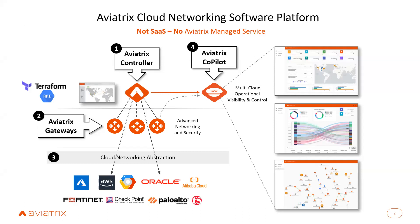Third is Cloud Networking Abstraction, so that the architecture remains the same throughout the different cloud platforms. Fourth is Aviatrix CoPilot, which is used for day-two troubleshooting, day-two visibility, and operational support.